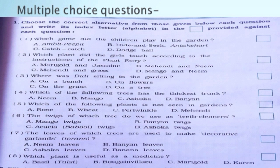Fifth question: which of the following plants is not seen in gardens? Options are: rose, wheat, periwinkle, mehendi.